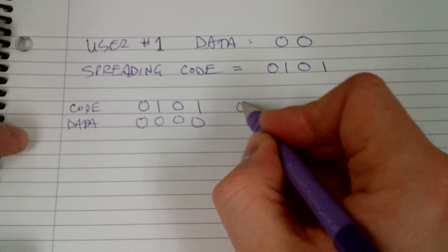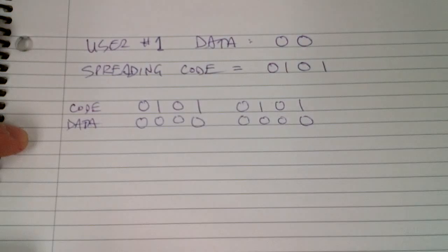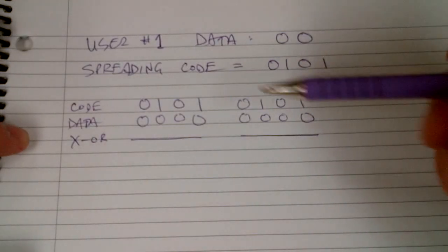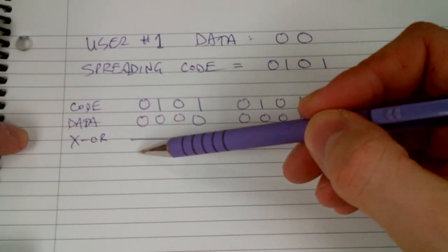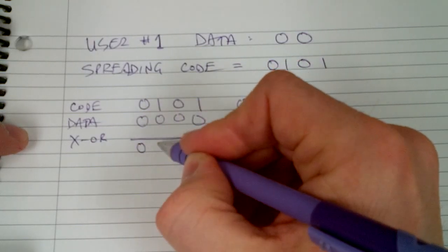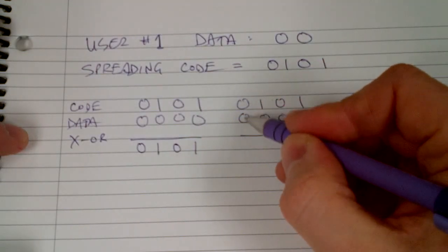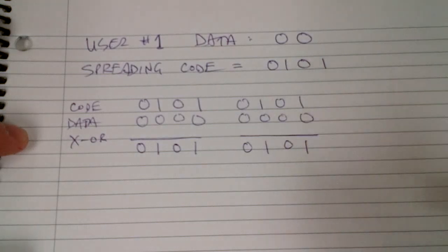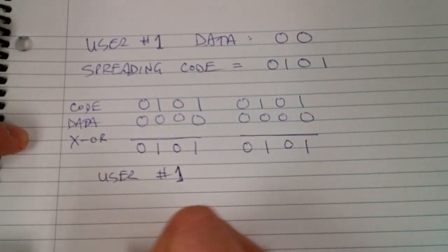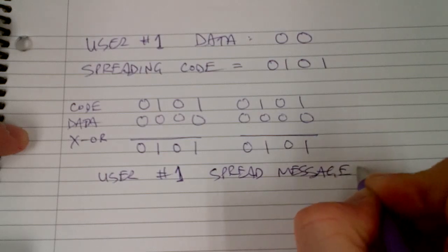Then you apply the code again to the next bit. And then you use the exclusive OR. Exclusive OR means: when they're the same, you get zero; when they're different, you get one. So same gives zero, different gives one. So then you can say that user number one has a spread message that looks like this.